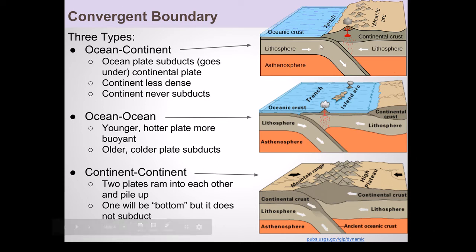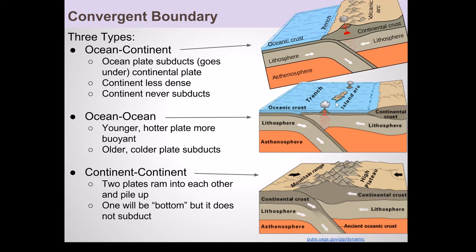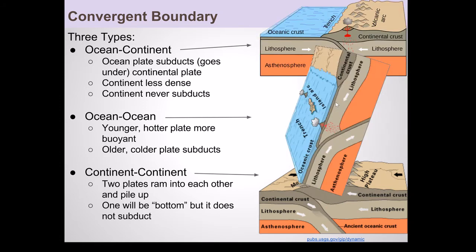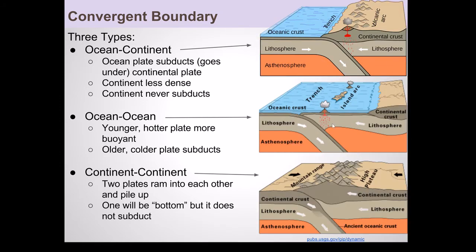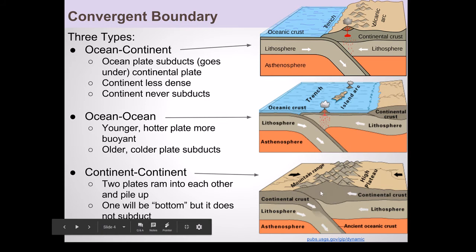Ocean-ocean and ocean-continent both create trenches, volcanoes, and very large earthquakes. Continent-continent still creates earthquakes, but does not create volcanoes. It also creates very large mountain ranges.